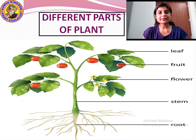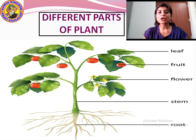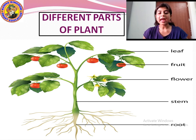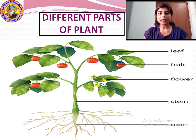Now let us study about the different parts of a plant. You know what plants are — plants are living things that provide us food. The food we eat, we get it from plants. The different parts of the plant are root, stem, flower, fruit and leaf.